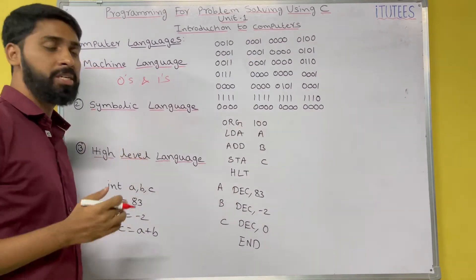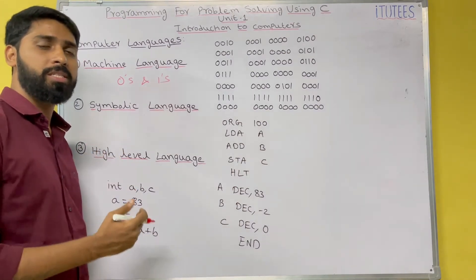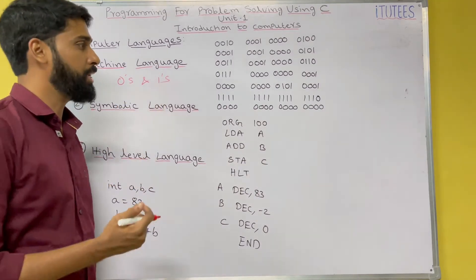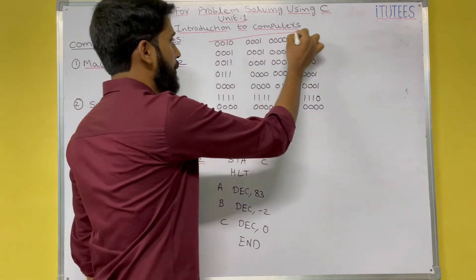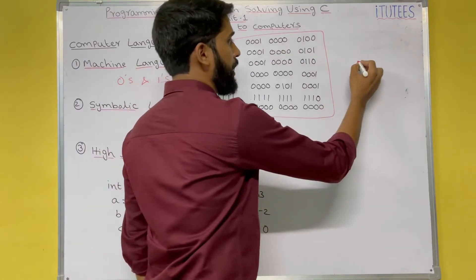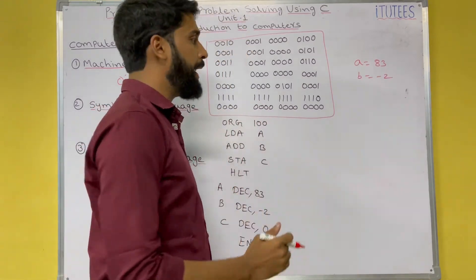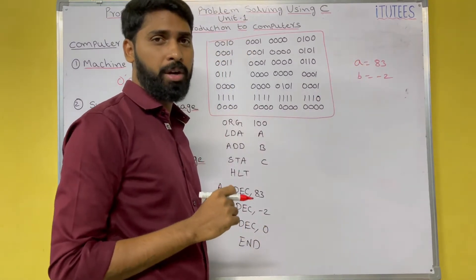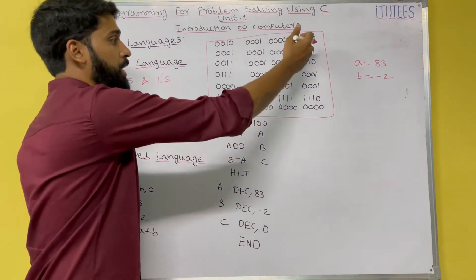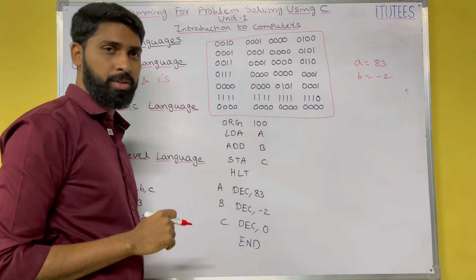Now the second one is symbolic language. Why do we need symbolic language? The system knows machine language but it is very much difficult to learn. Let us take one example. This is the machine language instruction to add two numbers, where a equals 83 and b equals minus two. If you want to add these two numbers, that is a program. If you choose machine language to write this program, these are the instructions you are going to write. If you observe them, this is the program to add two numbers.